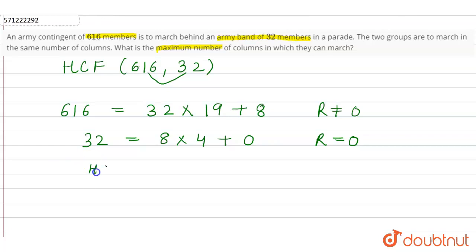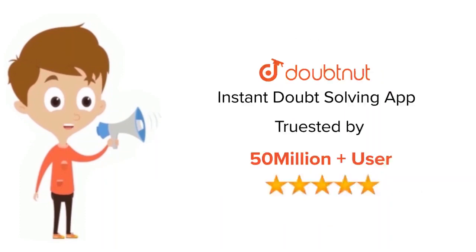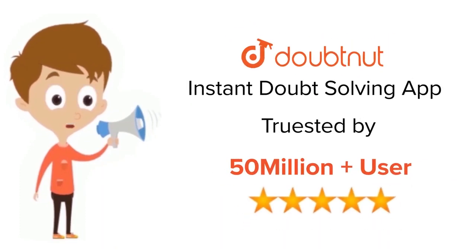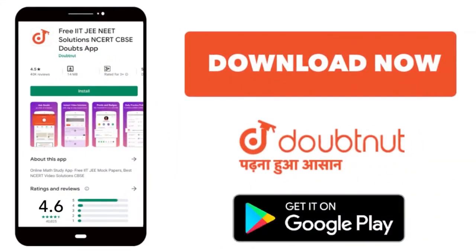So the maximum number of columns in which they can march is 8. For class 6 to 12, IIT JEE, and NEET level — trusted by more than 5 crore students — download DoubtNet today.